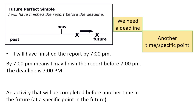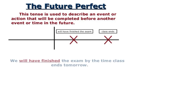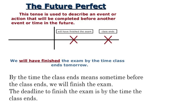The future perfect tense is used to describe an event or action that will be completed before another time or event in the future. Example: 'We will have finished the exam by the time class ends tomorrow.' 'By the time the class ends' means sometime before the class ends. The deadline to finish the exam is when the class ends, so we will have finished the exam before that point.